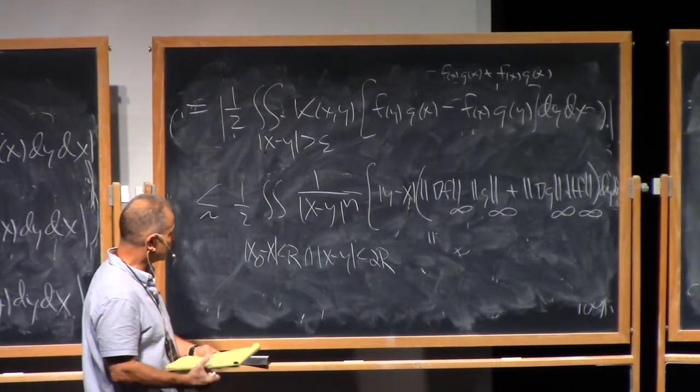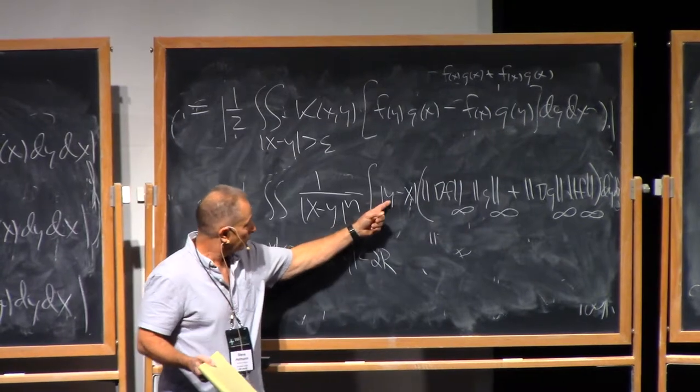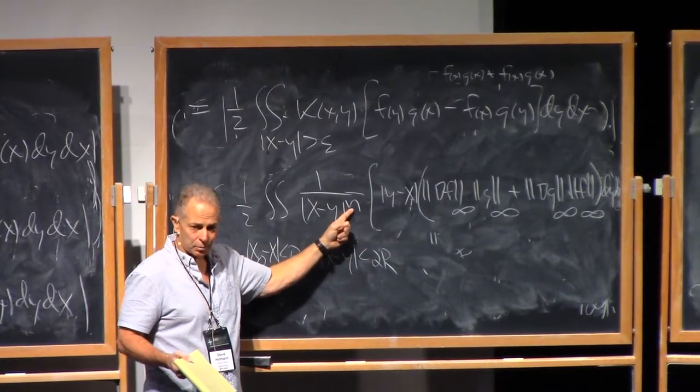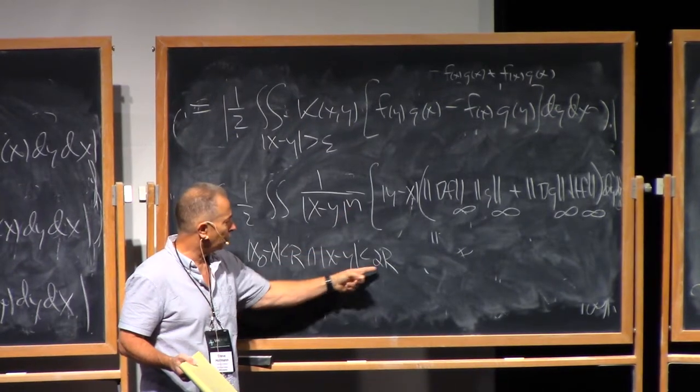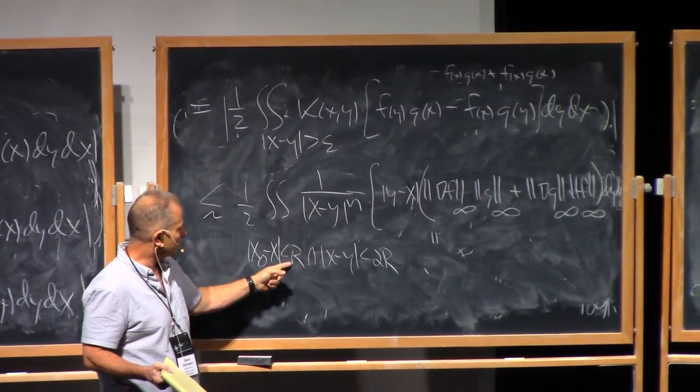And I put all that together. All of this stuff pulls out. I would notice what happens that I've weakened the singularity by order one. Now it becomes an integrable singularity. And when you integrate in y, you pick up a factor of r. When you integrate in x, you pick up r to the n.